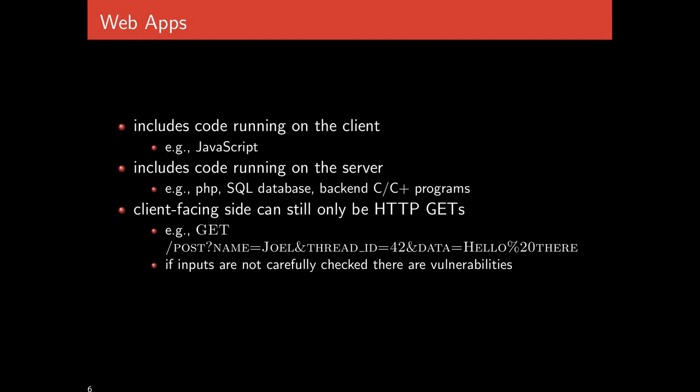We've talked about code running on the client, which is JavaScript. For web apps, we also have code running on the server. This could be any number of languages — C++, C, SQL databases, PHP, and all sorts of web technologies. Somehow information goes from the web server to the actual program that does stuff. This program interprets an HTTP request as inputs to a program and then runs it, so it really can just do whatever it wants — from a simple straightforward thing to inputs for a full C++ program.